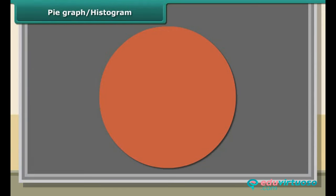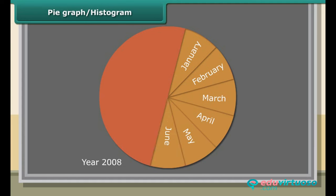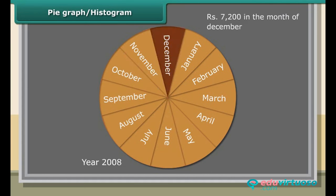Pie graph or a circle graph: Pie graph is used to compare parts of a whole. The circle represents the whole is a pie graph. In the month of December 2008, Ramu spends his monthly salary amounting to rupees 7,200 on different items.